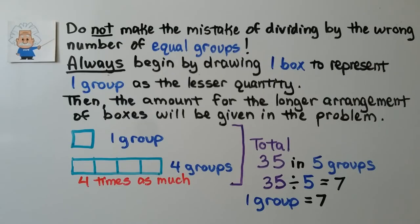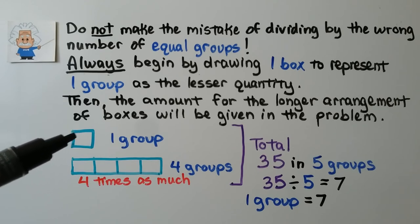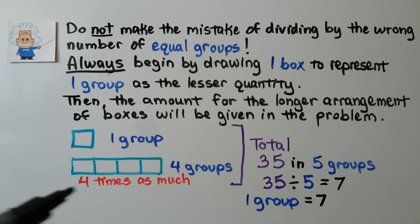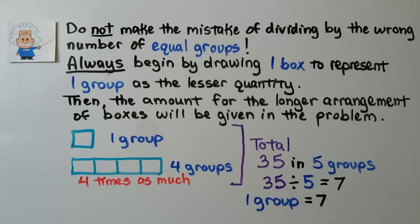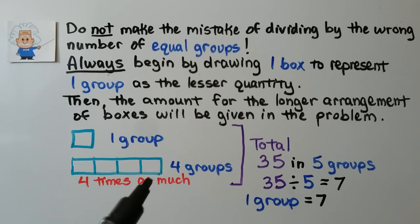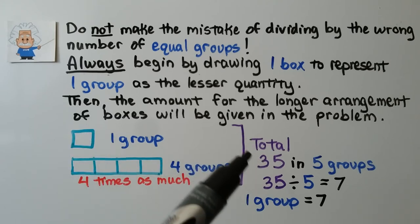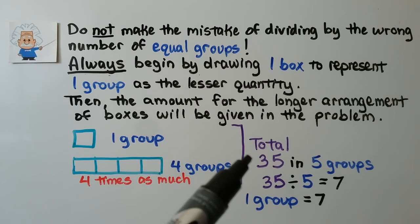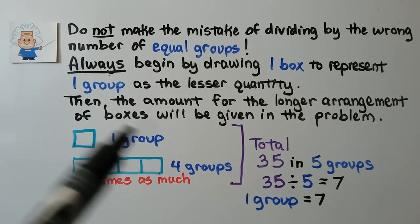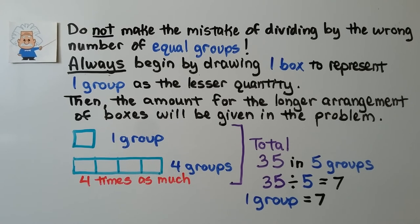Do not make the mistake of dividing by the wrong number of equal groups. Always begin by drawing one box to represent that one group as the lesser quantity. Then the amount for the longer arrangement of boxes will be given in the problem, like four times as much — so we make four groups, but that's a total of five groups. So if we know it's equal to 35, we have 35 divided by five groups, meaning one group equals seven.